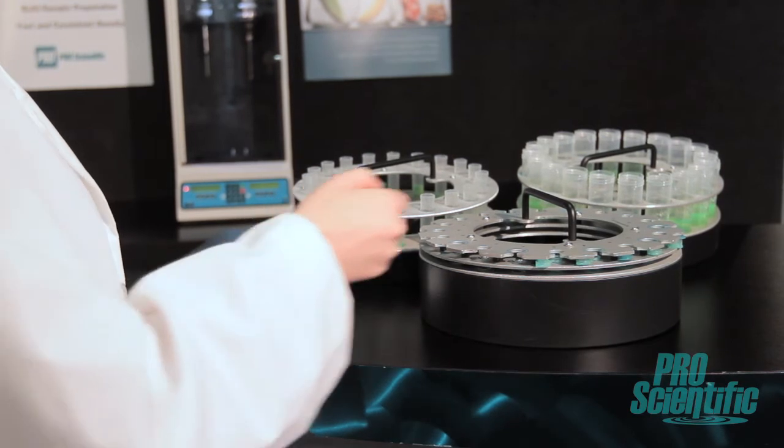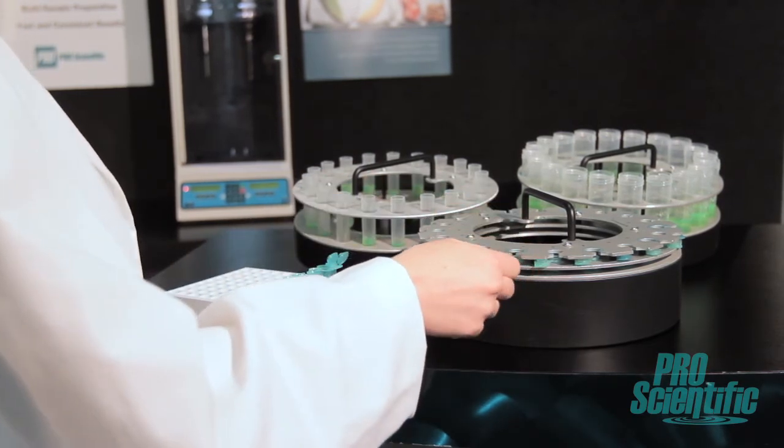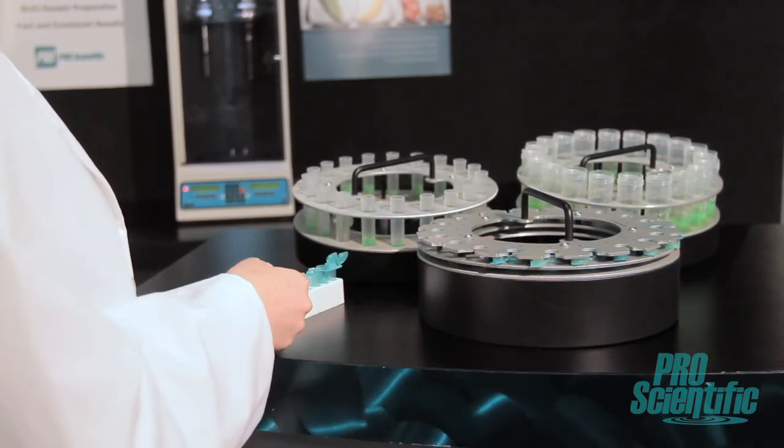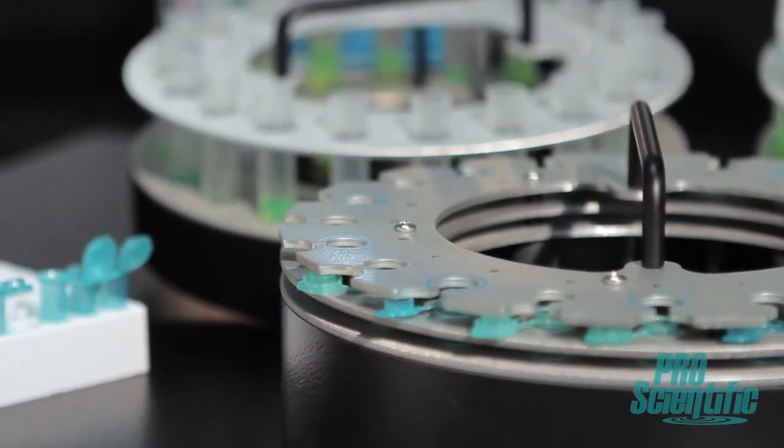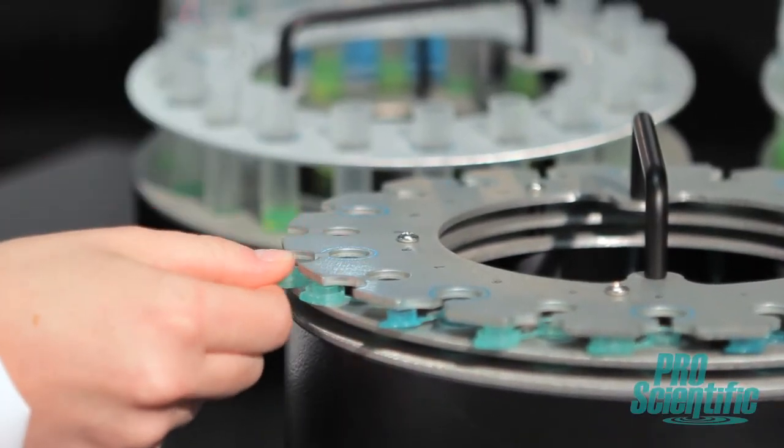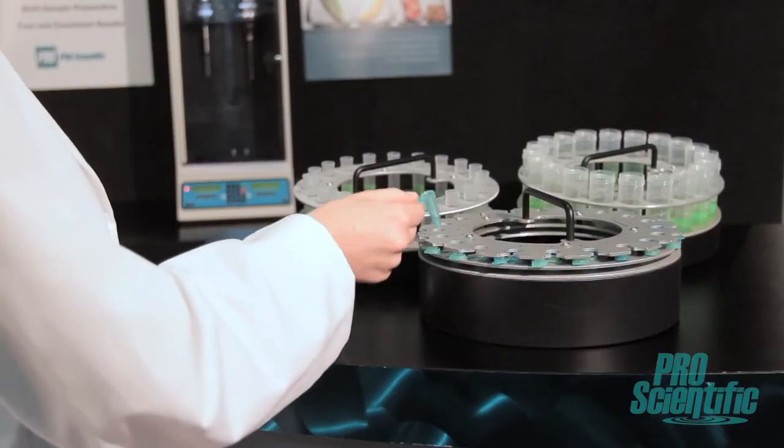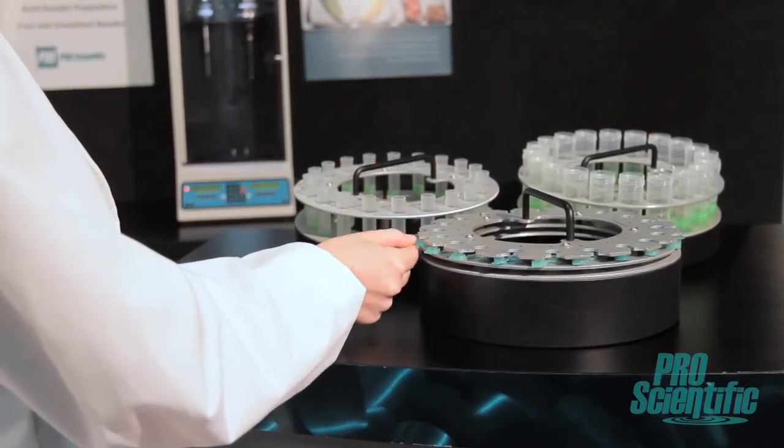Another added benefit of the DPS20 is that there's no need to alter or change the tube you'll continue using in your research. Whether processing in small microtubes or larger centrifuge tubes, the DPS20 carousel racks can accommodate a variety of tubes from 1.5 to 50 ml.